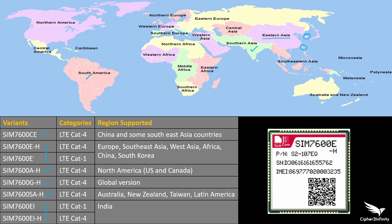I have also tested the E-H and E modems in India, so you can also use those if you live in India. The modem we are using in this course is the SIM7600E-H variant. One more thing: the global variant can be used anywhere in the world, but its price is almost twice compared to the other variants, because it supports all bands present worldwide.